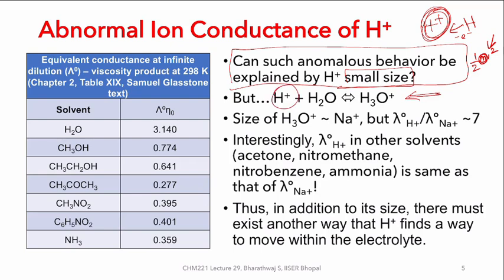In the presence of water, H⁺ ends up binding to water to form hydronium ion, and for this process the ΔG° is far more favorable — resulting in the fact that a bare proton cannot be present. Therefore, if one compares the size of the hydronium ion to any other cation, one would see that their sizes are quite similar. Specifically, the size of H₃O⁺ is quite similar to that of Na⁺, yet the conductance of H₃O⁺ to Na⁺ is about seven times different.